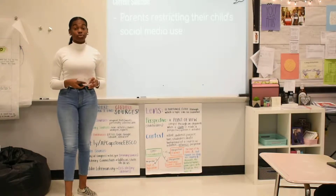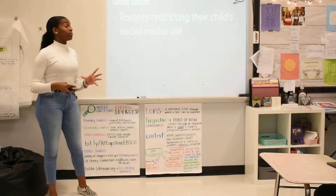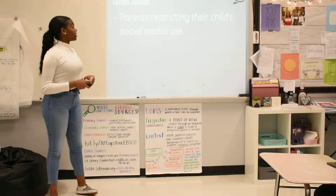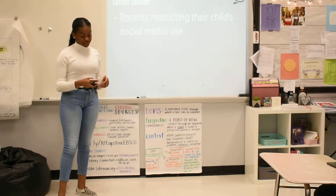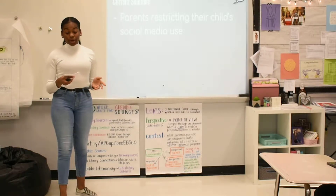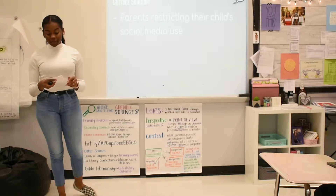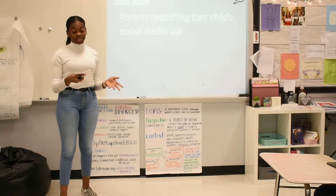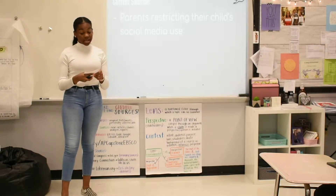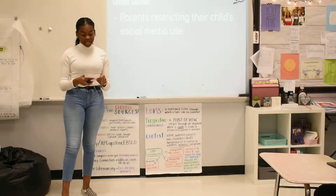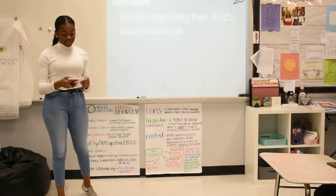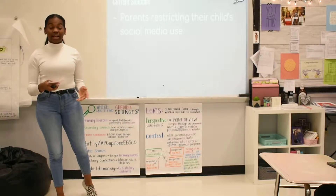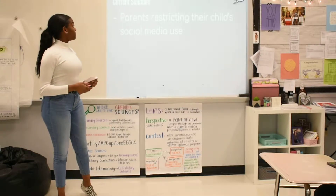A current solution to this spiraling problem would be parents restricting their child's social media use. However, only 39% of parents check their kids' phones regularly, leaving 61% of kids to be on social media as long as they want. This solution isn't very effective because it could lead to more teens taking their lives, and that's what we don't want to happen.